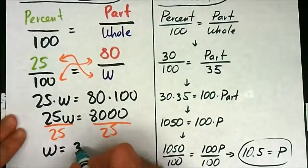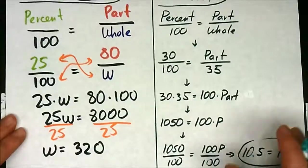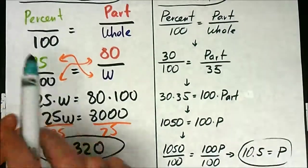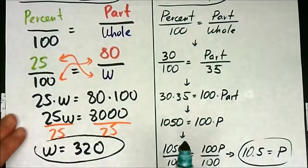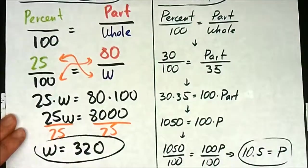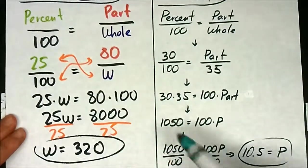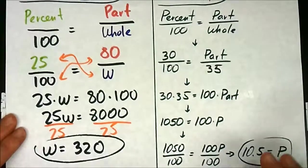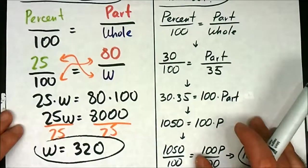So the answer is 320. Logic check: 80 is 25% of 320 — 25% is a fourth, and 80 is a fourth of 320 because 8 is a fourth of 32. That makes perfect sense, so it's a very reasonable answer.